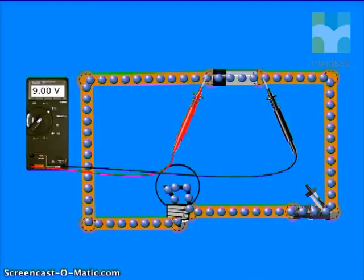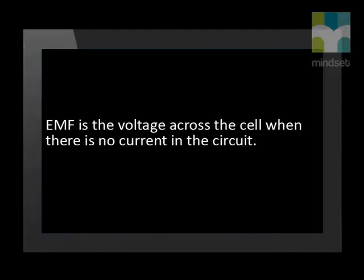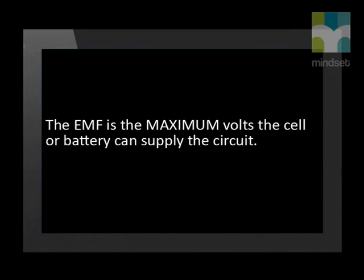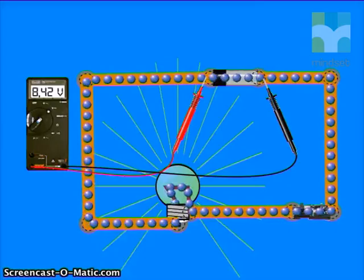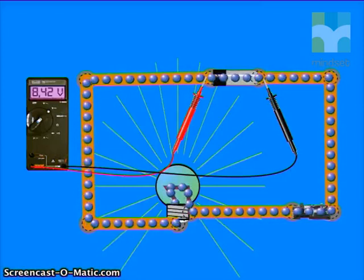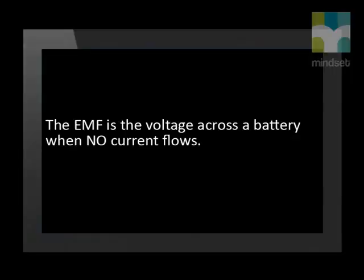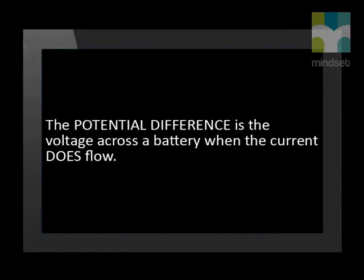The EMF is the voltage across the cell when there is no current in the circuit, and it is the maximum voltage the cell or battery can supply to the circuit. When the switch is closed, the voltmeter reads 8.42 volts — this is the potential difference, which is what the cell supplies to the circuit when current flows. In summary: EMF is the voltage across a battery when no current flows; potential difference is the voltage across a battery when current does flow.